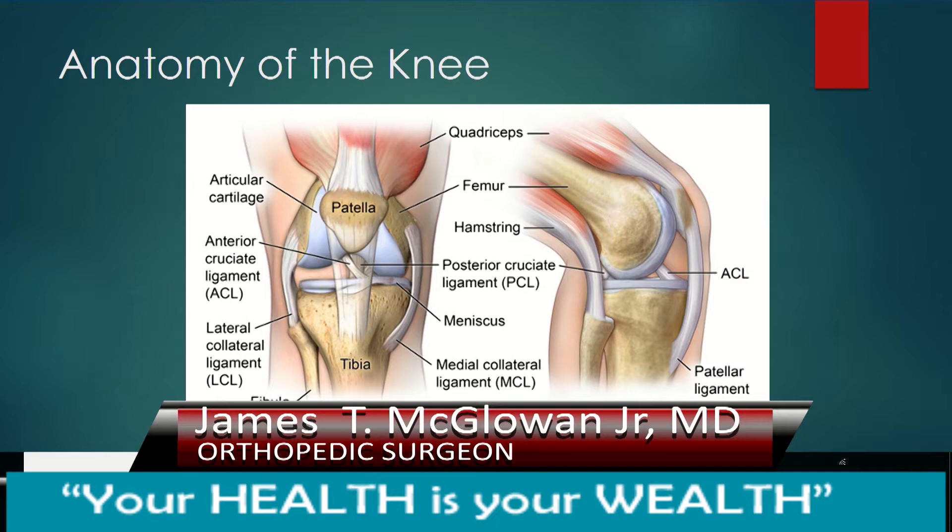Think of the knee as what we call a four-bar linked system as far as stability is concerned. There's a femur and a tibia forming the actual knee joint. The knee joint consists of the distal femur and the proximal or top part of the tibia, separated by shock absorbers called menisci — lateral and medial — which act as shock absorbers.